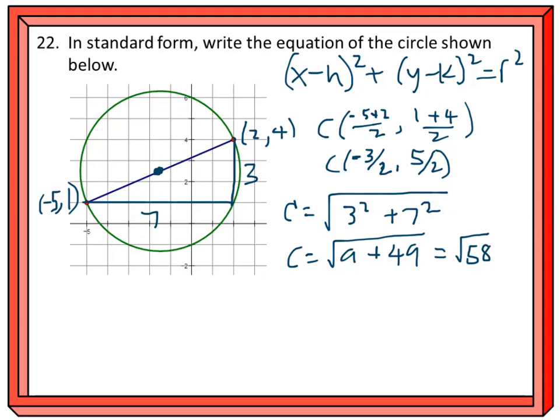That's the length of the entire diameter. So the radius is that number cut in half: √58 divided by 2.